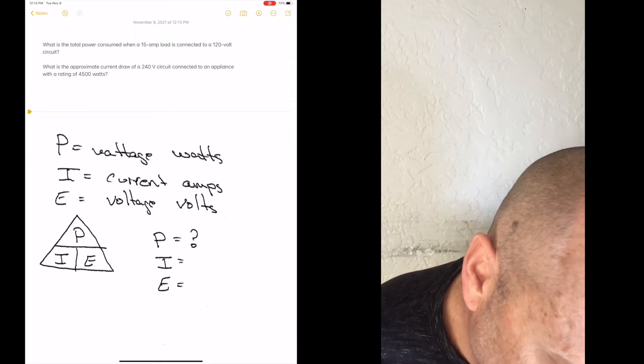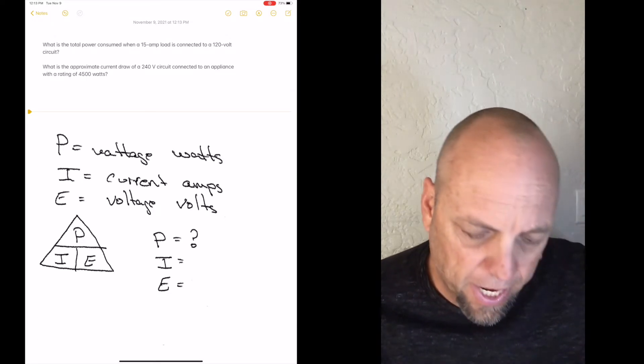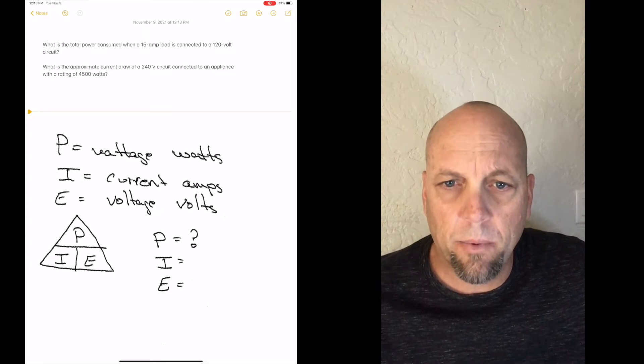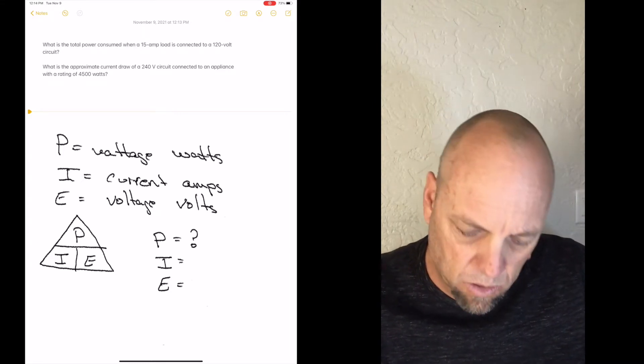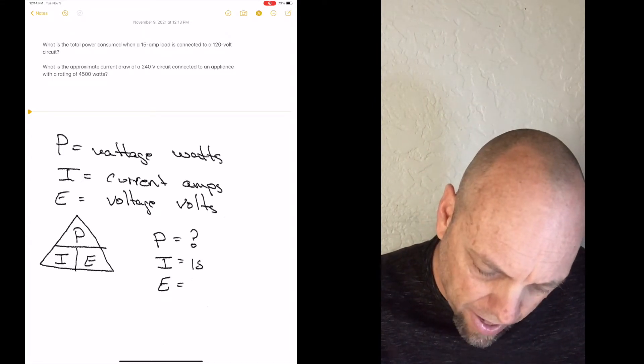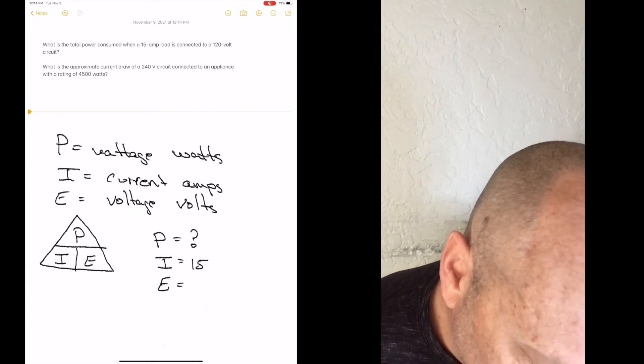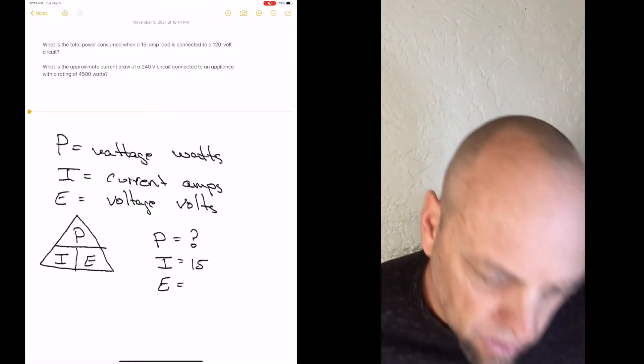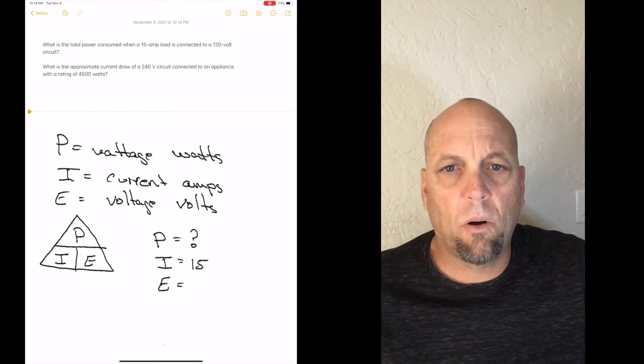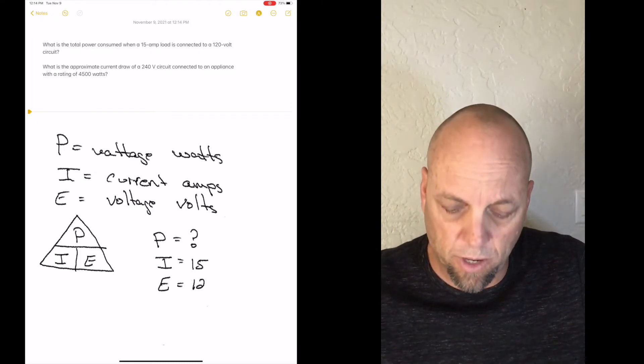Consumed when a 15 amp load. So 15 amps. We already know amperage is measured in I. So here we've got for I we have 15. And 15 amp load is connected to a 120 volt circuit. So E is volts. So there's 120 volts right there.